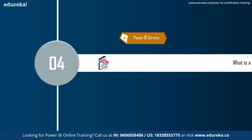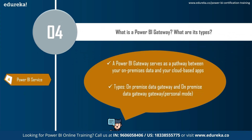The next question is: what is a Power BI gateway and what are its types? A gateway is responsible for moving your data from on-premise to your services or connecting your desktop. It is a connectivity mode in your data set and the service. There are two types: the standard gateway, which is preferred and allows multiple colleagues to access and manage the report, and the personal gateway, where only one person can use it.